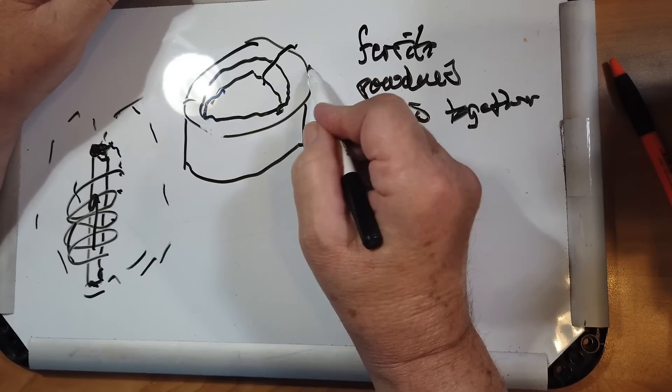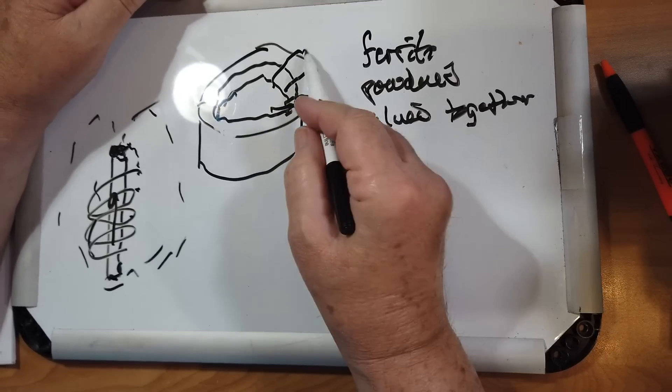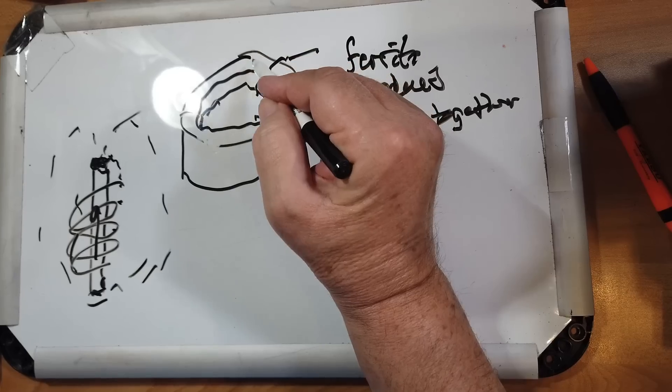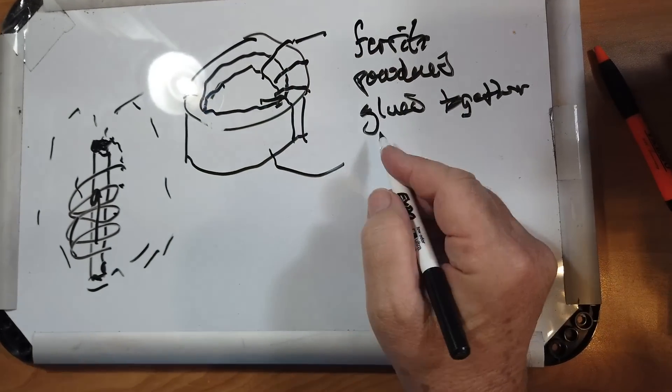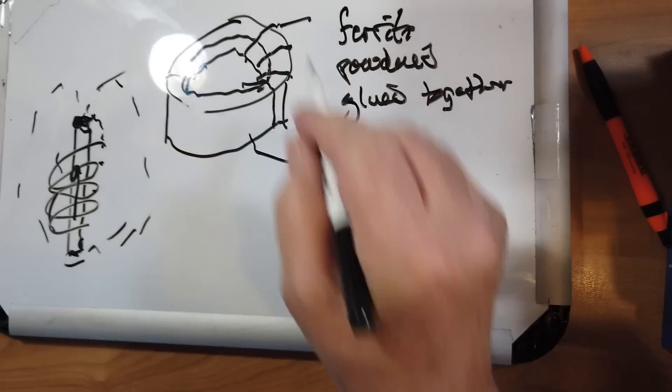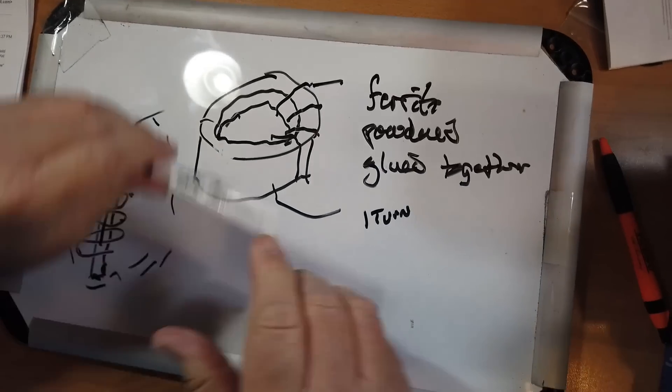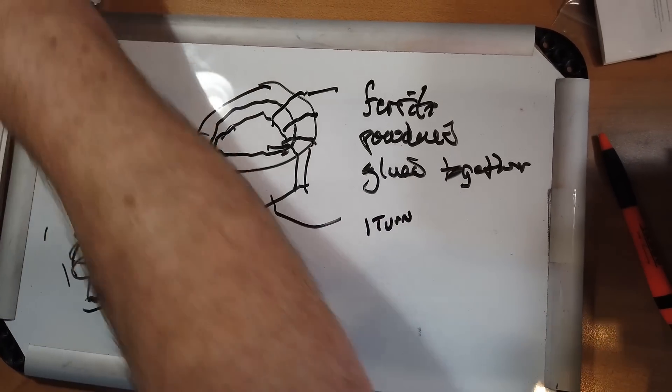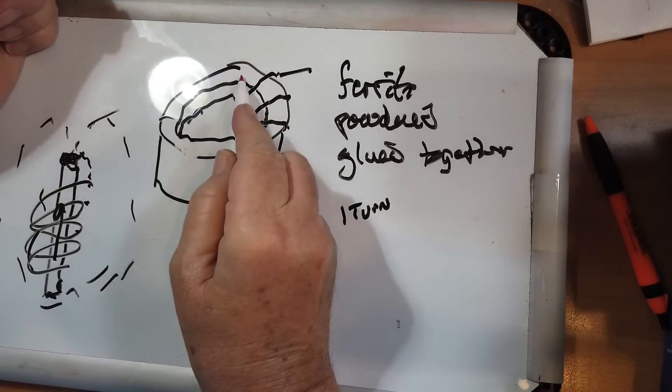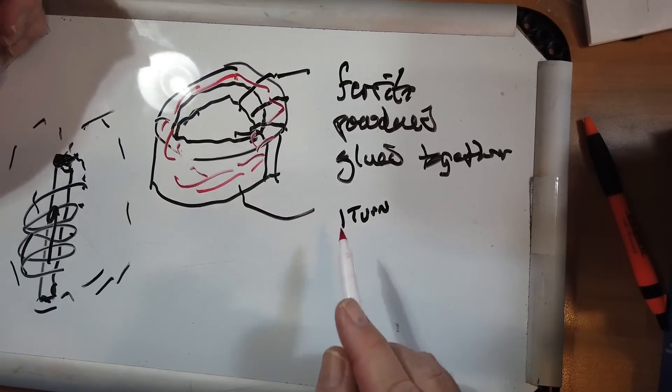Now, if we wind around here with our piece of wire, like that, every time the wire goes through the toroid counts as one turn. One turn means one time through the center of the toroid. As is pointed out, the magnetic field is confined largely to the toroid. The magnetic field is in here.